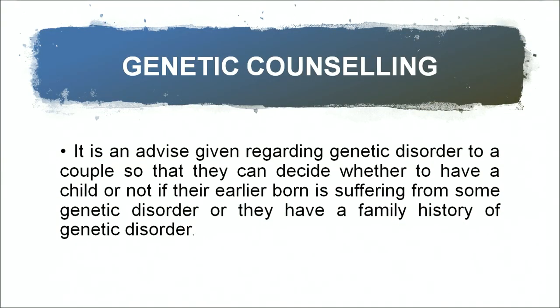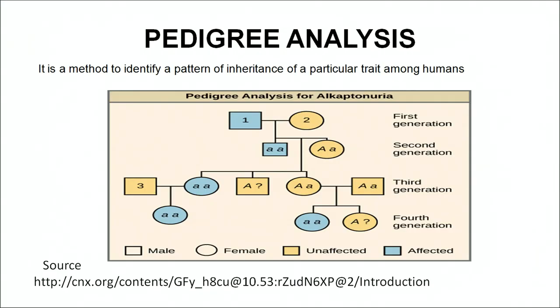As seen in the previous slide, there are many defects in the human genome present in certain individuals. Suppose a person who is thalassemic, and a carrier of thalassemia — if both the wife and husband are carriers for thalassemia and they want to have a child, they can always go to a genetic counsellor to find out whether they should have a child or not. Genetic counselling is advice given regarding genetic disorders to a couple so that they can decide whether to have a child, especially if an earlier child is suffering from a genetic disorder or there is a family history of one. This work of genetic counselling is done through pedigree analysis.